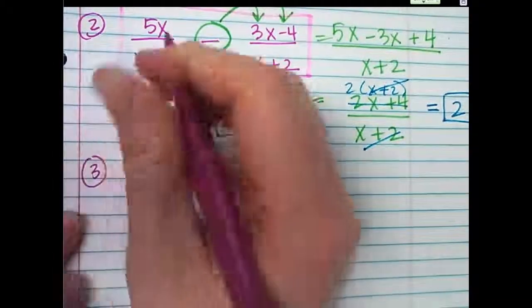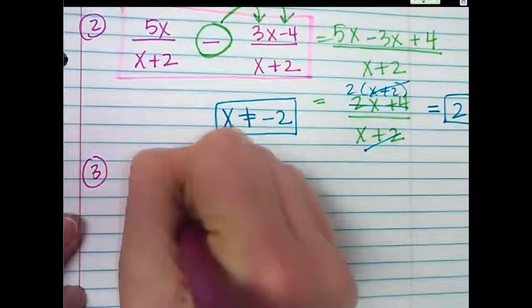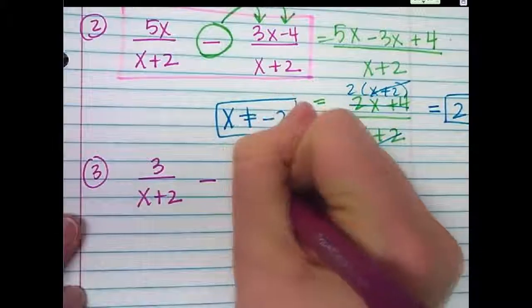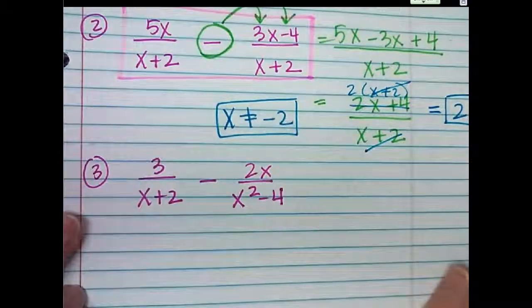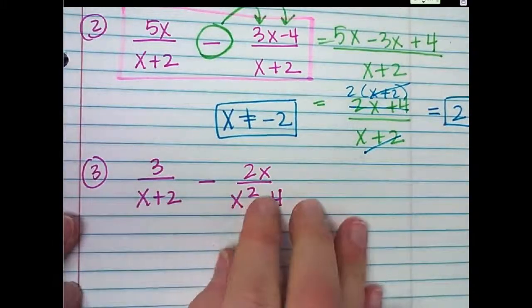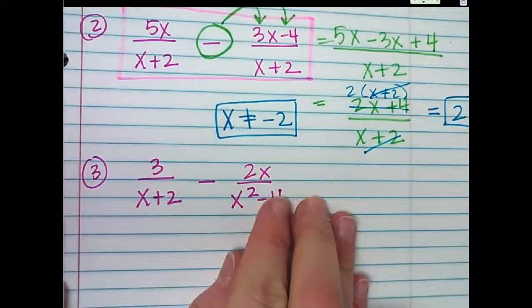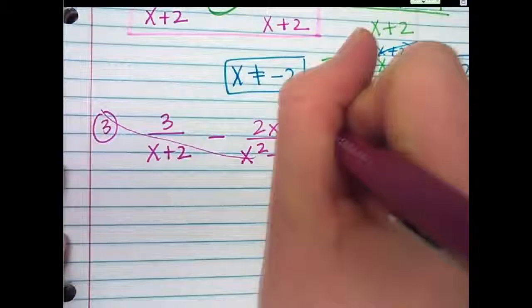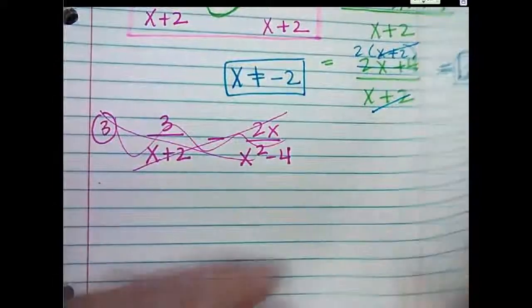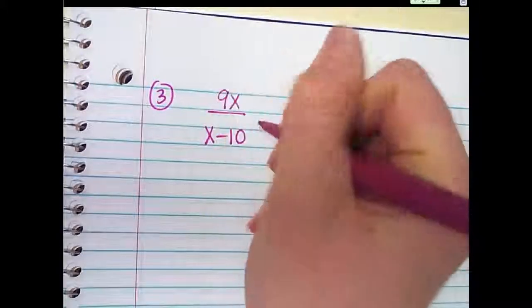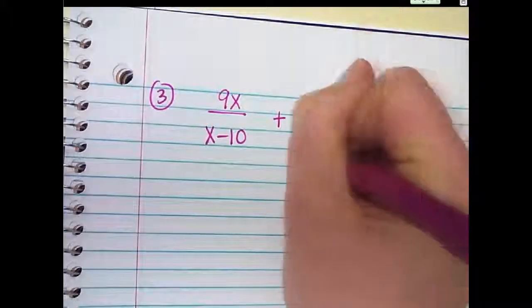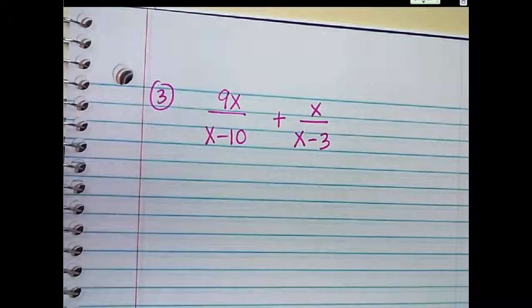Number 3: 3 over x plus 2 minus 2x over x squared minus 4. Actually, can we skip that one? I didn't mean to do that one. That one comes in later and it's a little bit easier than the others — that's why I wanted to skip it. Sorry, I went to the wrong one. I still have like 9 for you.